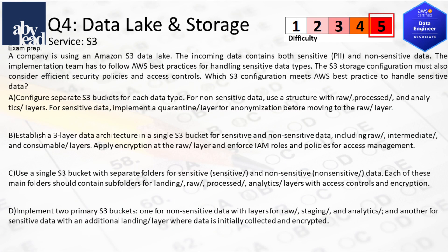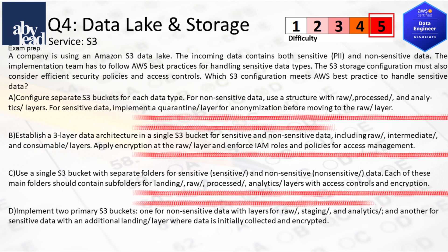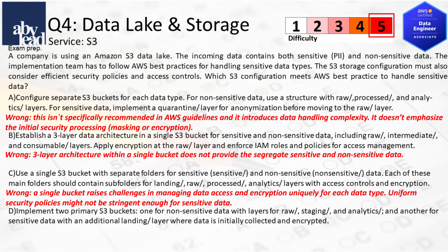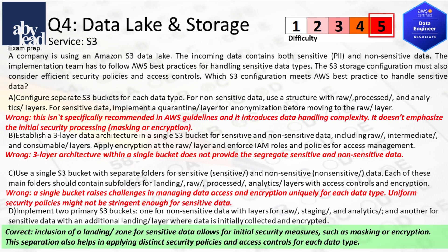Question 4: How do you efficiently and securely handle PII data in an S3 data lake? Separate S3 buckets for each data type with complex handling isn't recommended. A single bucket with a three-layer architecture doesn't segregate sensitive and non-sensitive data, as uniform security policies aren't stringent enough. Most advisable is to include an S3 landing zone for initial masking or encryption.